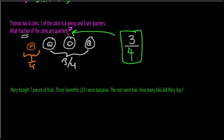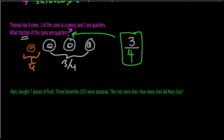It says Mary bought seven pieces of fruit. Three-sevenths were bananas — three out of seven were bananas. The rest were kiwis. How many kiwis did Mary buy? Well, let's figure that out. We know we have seven pieces of fruit, so let me draw out some pieces of fruit.